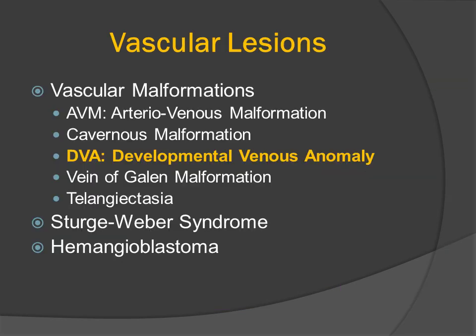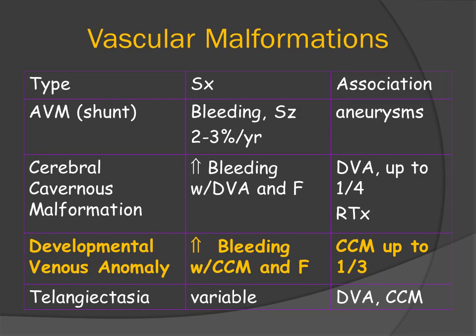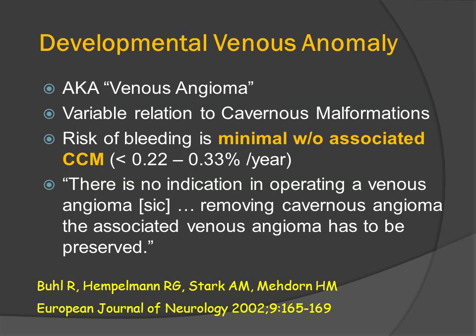Developmental venous anomalies are also called venous angiomas. They have a variable relationship to cerebral cavernous malformations. The risk of bleeding in these lesions is minimal without an associated CCM. There is no indication in operating on a venous angioma. If there is an associated cavernous malformation, that should be resected separately.